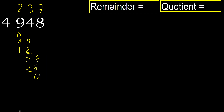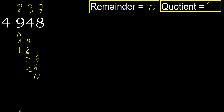That is not a number, therefore finish it. Therefore 948 divided by 4 is 237.